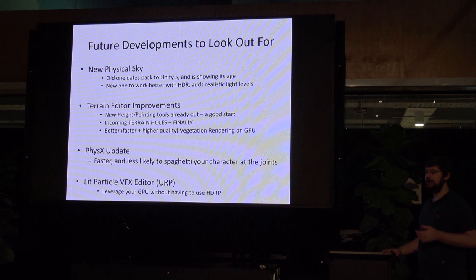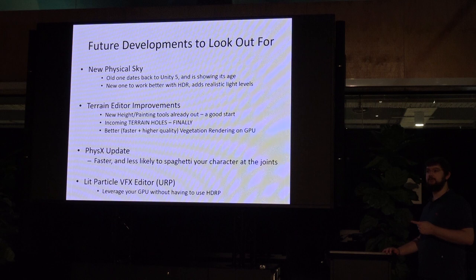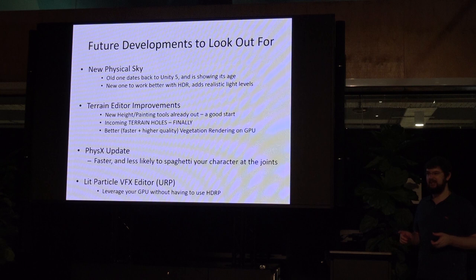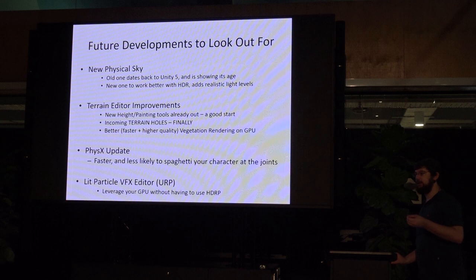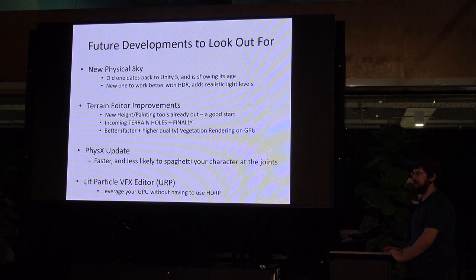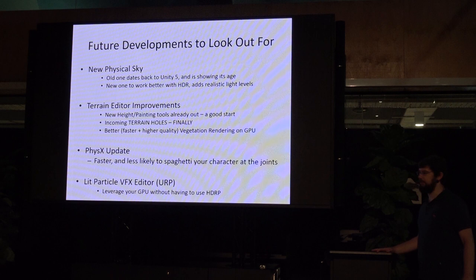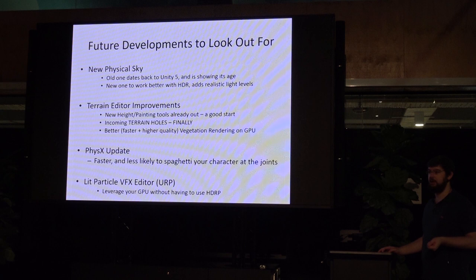Terrain editor improvements: a few versions back they added better terrain painting tools — height map blending between splat maps, better stamp systems, and terrain holes. That's been a long-time feature request for everyone who's used Unity terrain. Now you can cut holes in the terrain, though it's still limited by map resolution so holes look a bit funny from distance. In the future, they're moving to a better, faster, higher quality version of vegetation rendering — right now it's all on the CPU, not particularly fast or good looking, and the patches aren't great. It'll likely be similar to the VFX editor: a lot more on the GPU, a lot faster. Get ready to crank those grass particle counts up — full forest environments are on the cards.